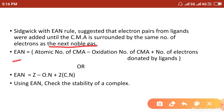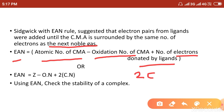The calculation uses the formula: EAN = atomic number of the central metal atom − oxidation number + number of electrons donated by the ligands. Note it is the total number of electrons donated, not just electron pairs. Alternatively, EAN = atomic number − oxidation number + 2 × coordination number, since each ligand donates one electron pair (2 electrons).